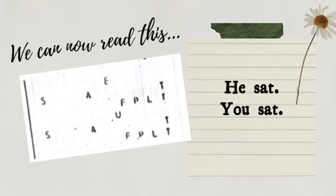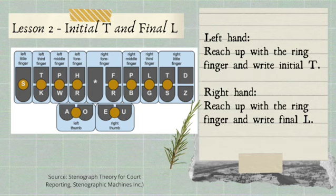So at this point we'll proceed to lesson two. For lesson two, that's initial T and final L. Using your left hand, reach up with the ring finger and write initial T. So initial T is left ring finger. For your right hand, reach up with the ring finger and write final L. So final L is right ring finger. You try to position your fingers there and practice.